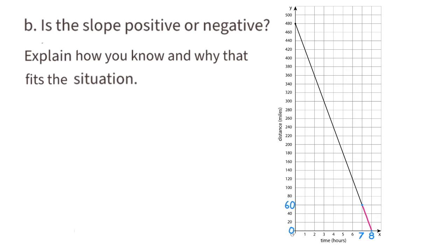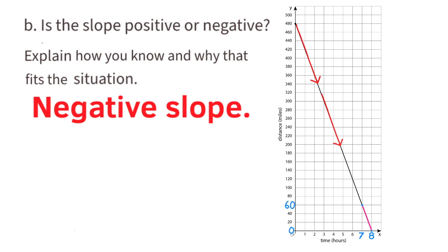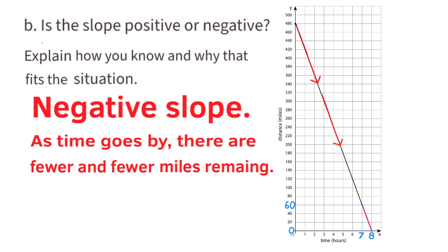B: Is the slope positive or negative? Explain how you know and why that fits the situation. Looking at the line, the slope heads down to the right, which means a negative slope. That fits the situation because, as time goes by, there are fewer and fewer miles remaining.